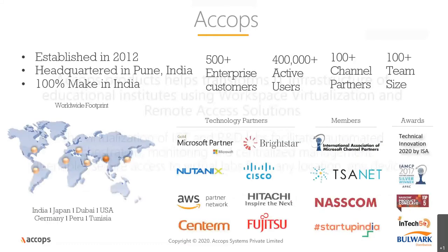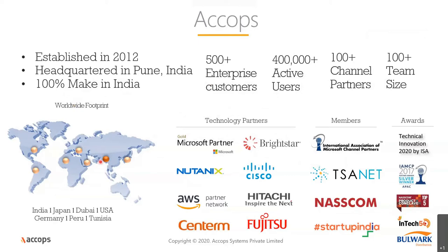Briefly about HACOPS: we were established in 2012, this is our eighth year. We are headquartered in Pune, India — the sister city to Mumbai — with a team of 105 plus. We are a 100% made-in-India, bootstrapped, self-funded company. Today we serve around 500-plus enterprise customers. India is our major market, and the Middle East is now growing significantly for us. Japan is also a very big market. We operate in other countries through distributor networks, and Bulwark is our distributor in the Middle East region.